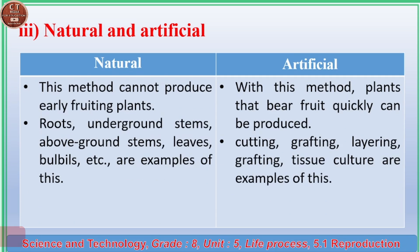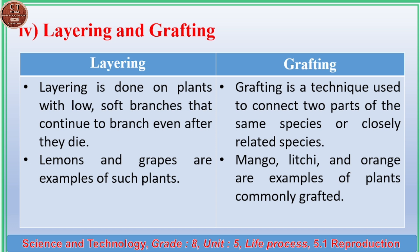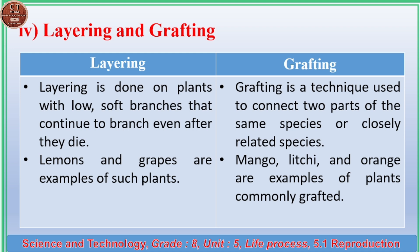(iii) Natural and Artificial vegetative propagation. Natural: this method cannot produce early-fruiting plants; roots, underground stems, above-ground stems, leaves, and bulbils are examples. Artificial: plants that bear fruit quickly can be produced; cutting, grafting, layering, and tissue culture are examples. Layering is done on plants with low, soft branches such as lemons and grapes. Grafting connects two parts of the same or closely related species — mango, lychee, and orange are commonly grafted.